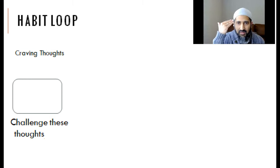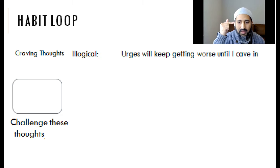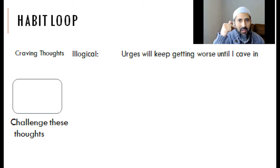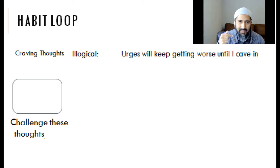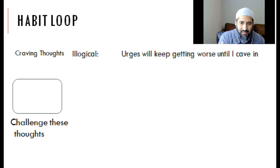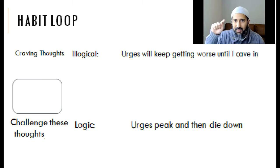Say for example you have a trigger, and then you have some cravings and thoughts to engage in your addictive behavior. The irrational thought might be: 'Urges will keep getting worse until I cave in, and I might as well cave in because it's just going to keep going and getting worse.' The logical thought to counteract that — the rope to hobble it with — is: urges peak and then they die down.